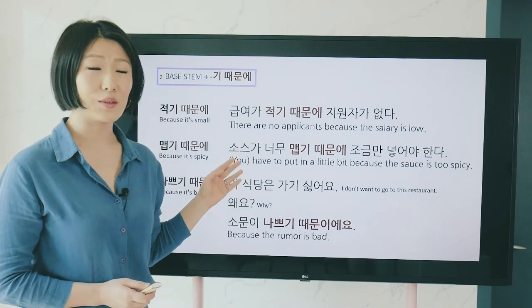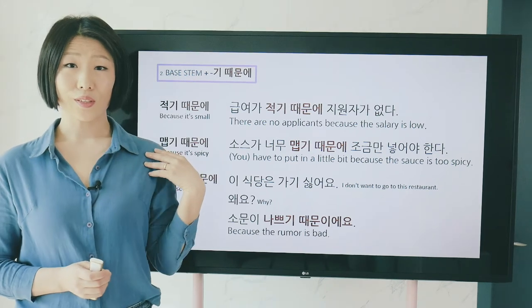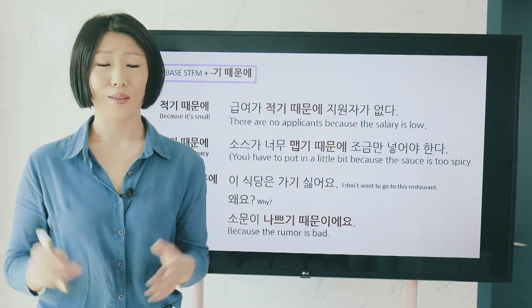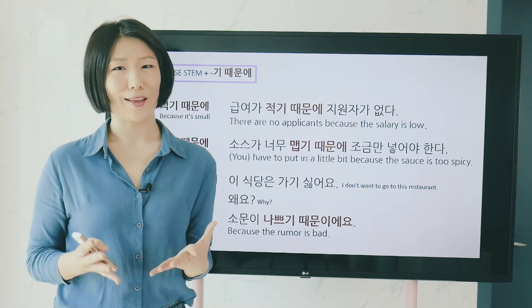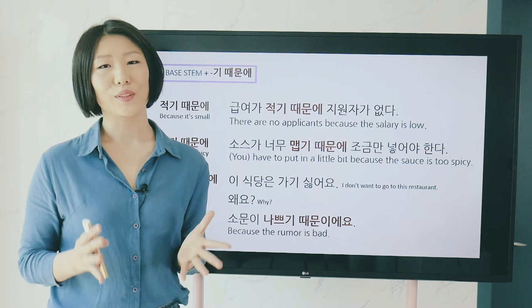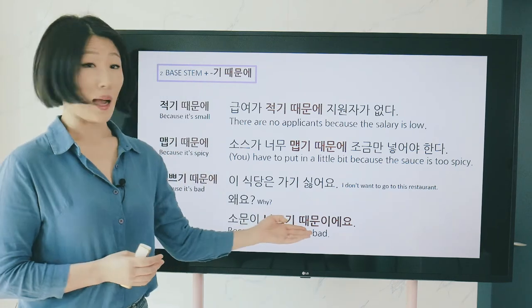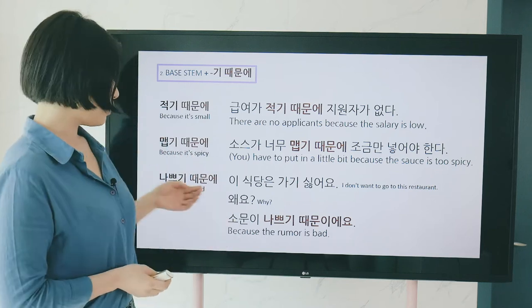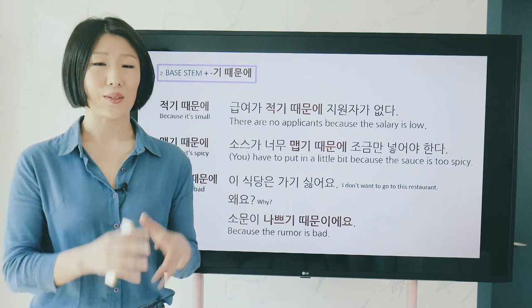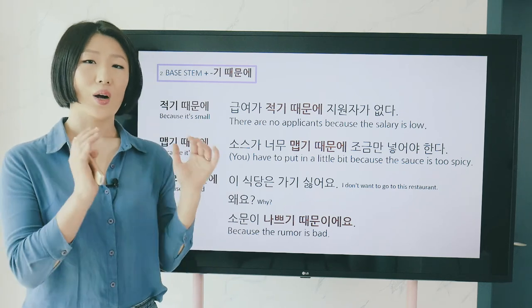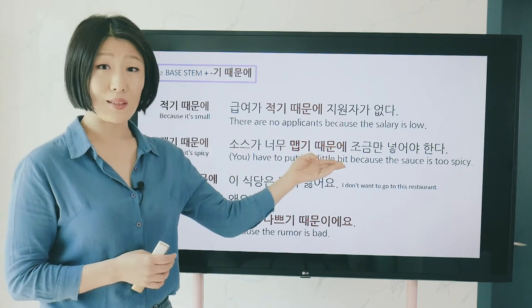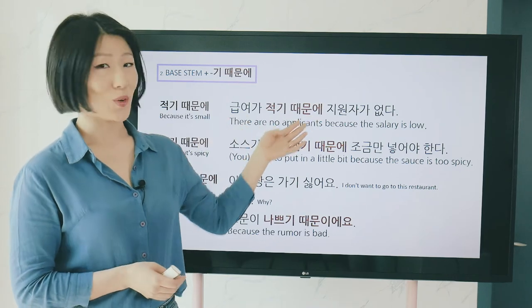Here's a short conversation example using 나쁘기 때문에. I say: 이 식당은 가기 싫어요 (I don't want to go to this restaurant). You ask: 왜요? (Why?). I answer: 소문이 나쁘기 때문이에요 (Because the rumor is bad). You can use 나쁘기 때문이에요 or 맵기 때문이에요 or 급여가 적기 때문이에요 as simple standalone sentences.